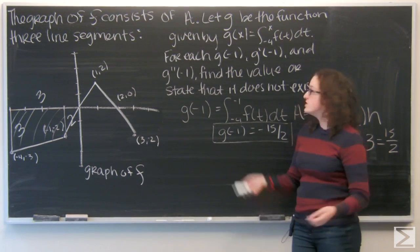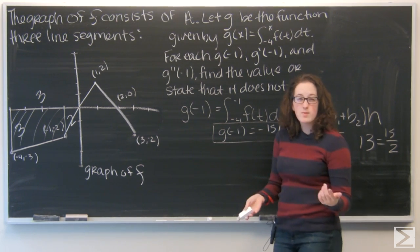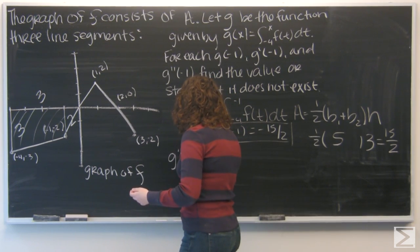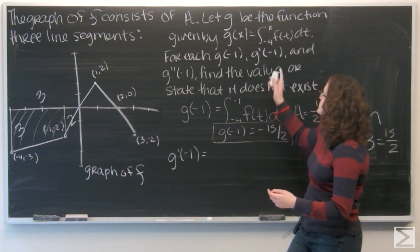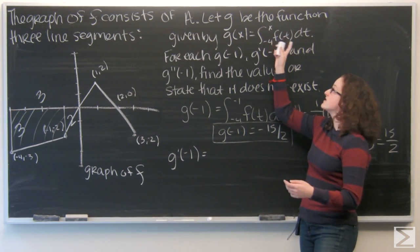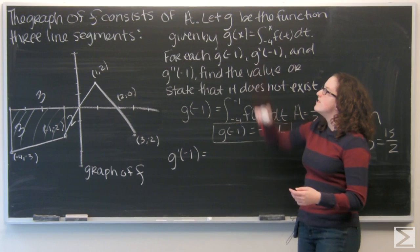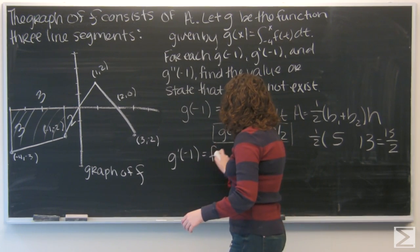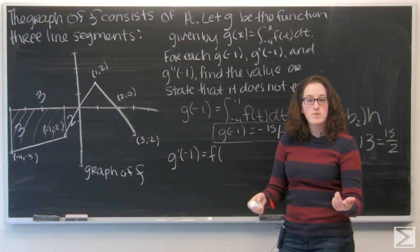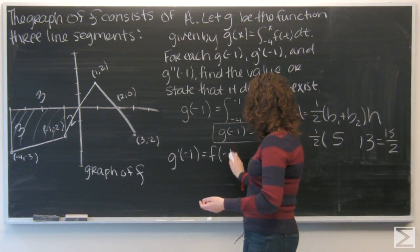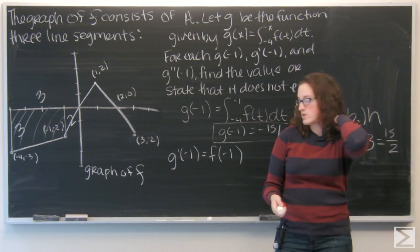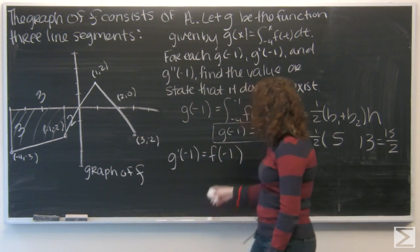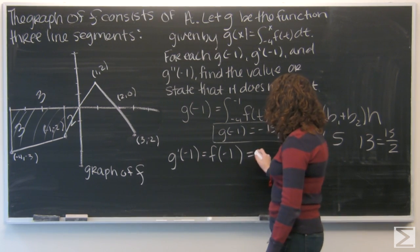Now let's take a look at g prime of negative one. If g is the integral from negative four to x of f of t, then by the Fundamental Theorem of Calculus the derivative of g is f of x. So g prime of negative one equals f of negative one. Using the graph, I have the point negative one, negative two. So g prime of negative one is negative two.